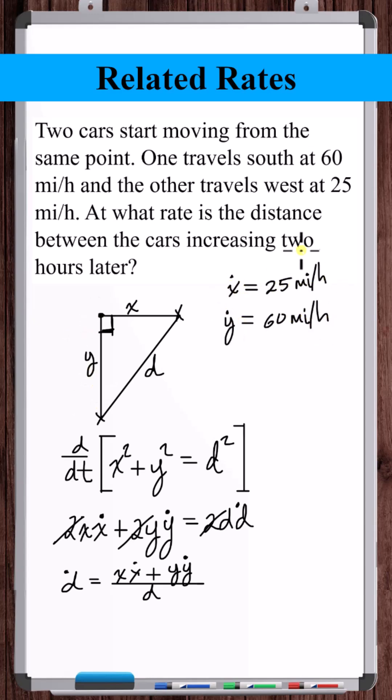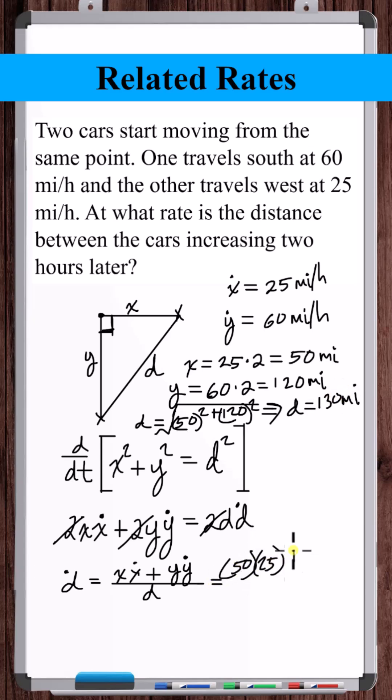Use distance equals rate times time, and time equals two hours, to solve for x and y. Now use the Pythagorean theorem to find d. Now solve for d dot: 65 miles an hour.